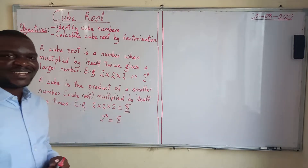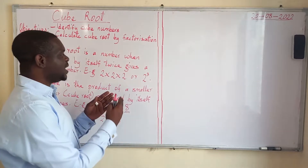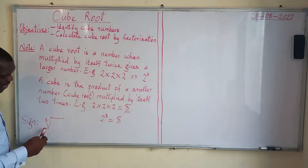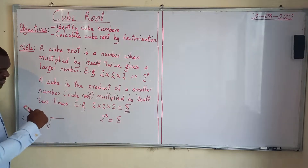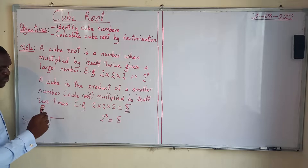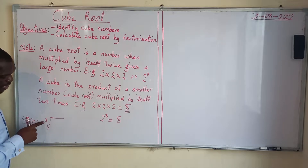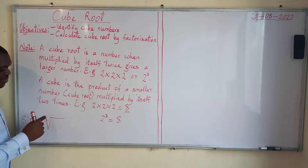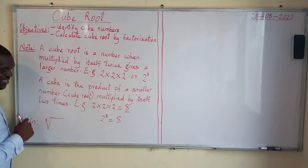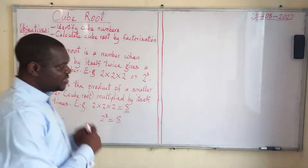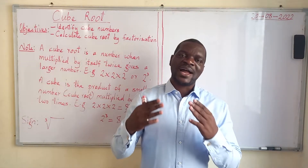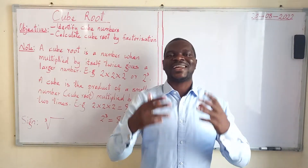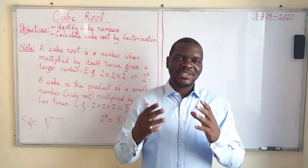With this understanding, we are going to look at the sign for cube root. The sign for cube root is what you have here on the board. Last time we saw a similar sign but where we have the small 3 written, it was 2 or nothing. But for cube root, you have a small 3 written. Take note of this. With this in mind, we are going to move forward by looking at practical examples on how we can calculate the cube root of given numbers.